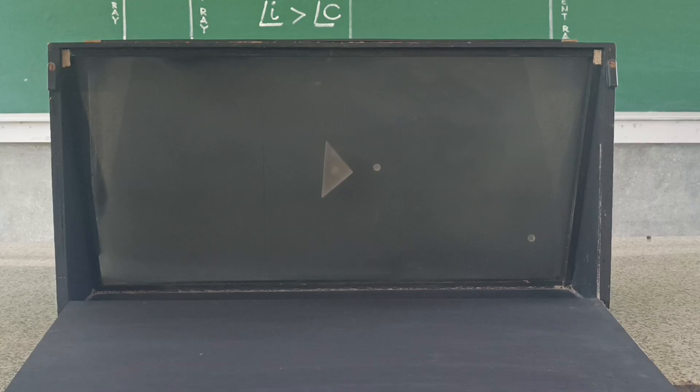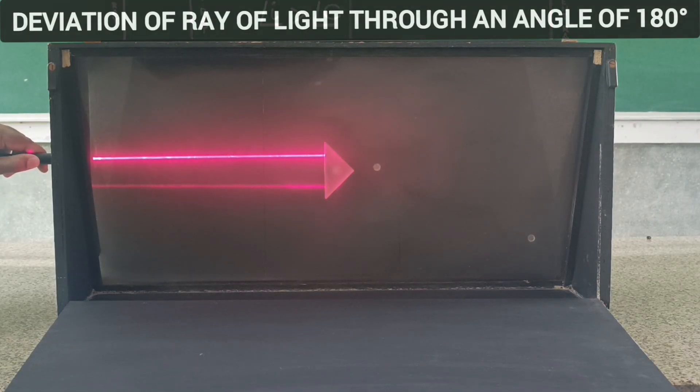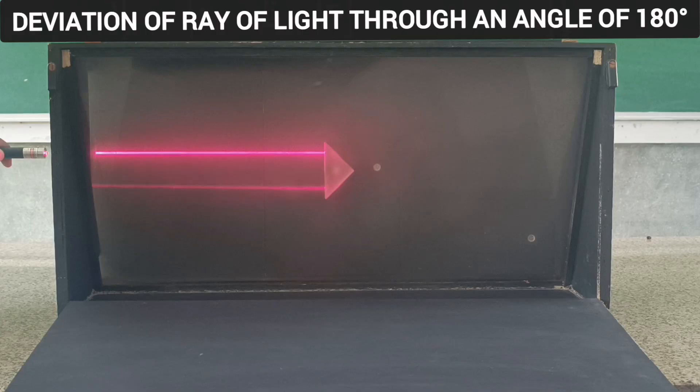By rotating the prism, the ray of light can be made to deviate through an angle of 180 degrees as well. Here, the light suffers two total internal reflections.